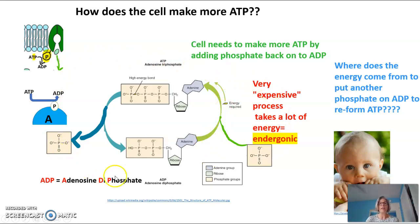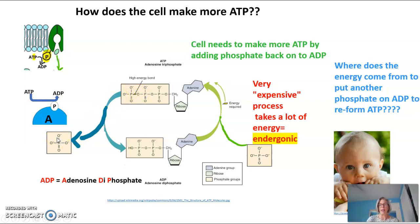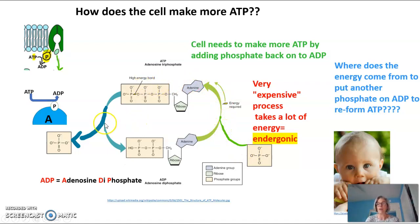This whole cycle is known as the ATP cycle: ATP has its three phosphates and high-energy bonds; the phosphate is placed on another molecule to transfer energy to it, which generates ADP; then a phosphate must be added back to ADP to regenerate ATP. That is the ATP cycle.